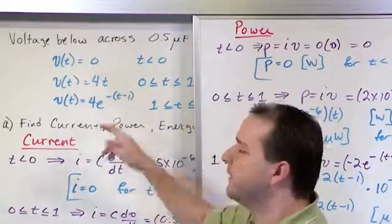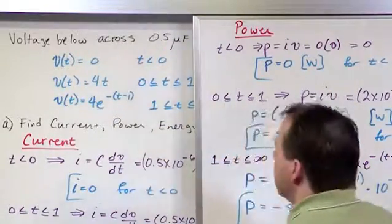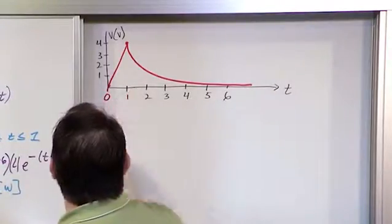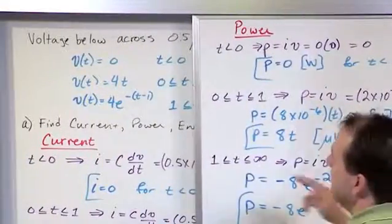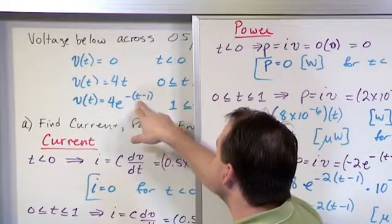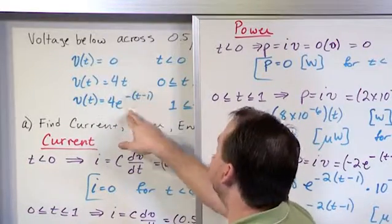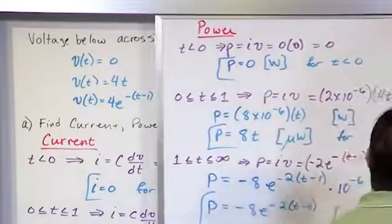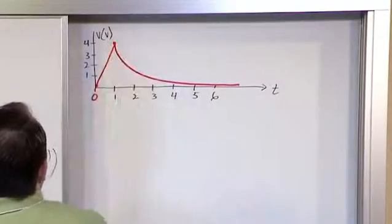The reason we have T minus one here is because this is basically a shifted function and it's decaying from a starting value of one second. That's why it has T minus one here. So if I put one second in here, it's E to the zero, which gives me one and then it's multiplied by four. So that means my maximum value is going to start up at four.